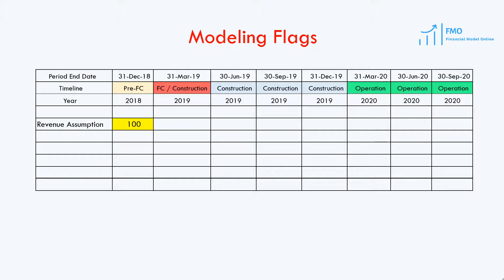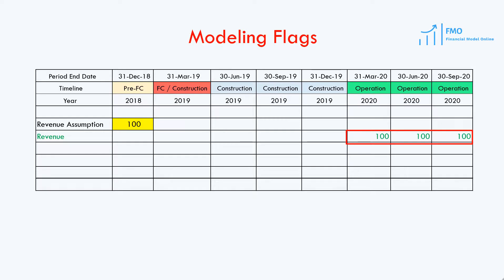We could hard-code the revenue number of 100 into the cells during the operations period, but obviously hard-coding would break all of the rules in financial modeling. We could also simply link to our assumption cell, but this too would break best-practice modeling rules, as it would mean having different formulas in two adjacent cells on the same row — in the cells in the construction period and the cells in the operations period. We could insert an IF function and impose a condition to link to the assumption cell only when the year is greater than 2019, and this would do the trick. However, this is a very inflexible solution and we cannot reuse this formula in other places in our model.